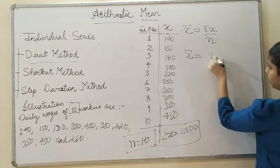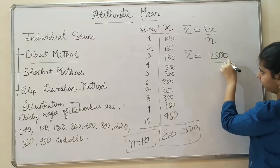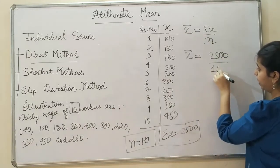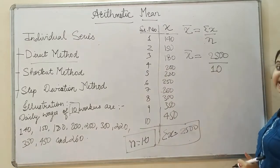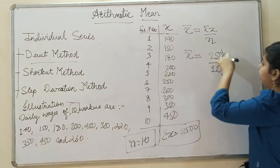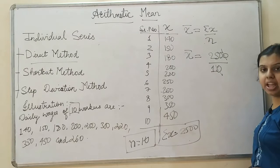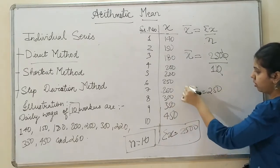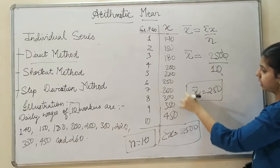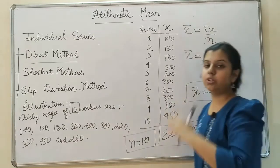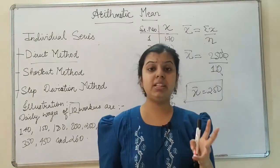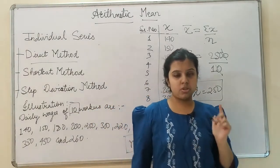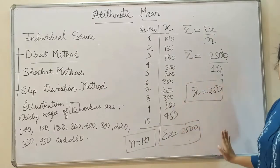So my sigma X is 2500. What is my n? It has to be divided by n, so my n is 10. When I divide 2500 by 10, what I get is 250. So my mean in the given set of data is 250. The mean is actually the central value in the data, so my central value in this set of data is 250.